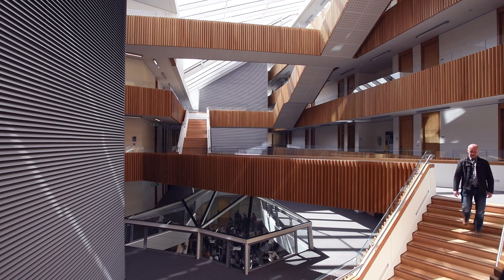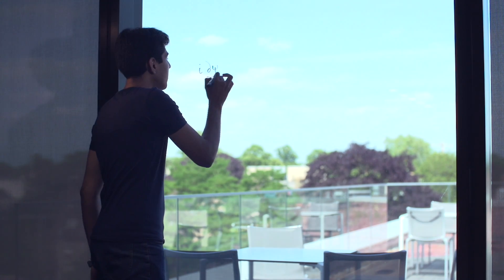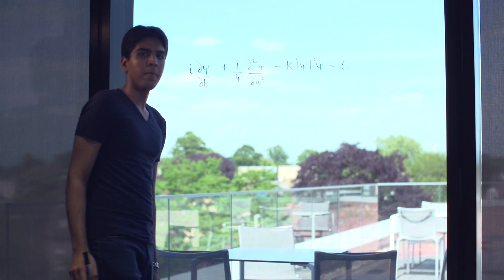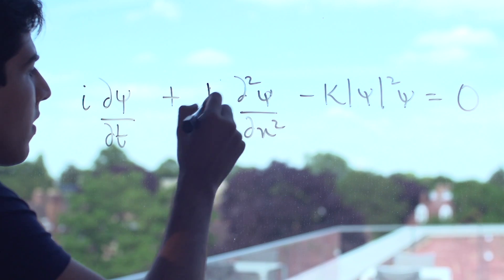This is DPhil student Alissa. I do research into how banks are connected with each other and how the financial system is connected with the real economy. This is master's student Rehan. I use mathematics to understand how cyclones and tsunamis and natural disasters of the sort propagate along vortex filaments.